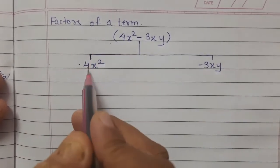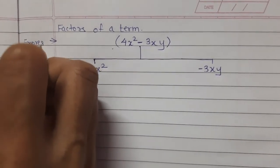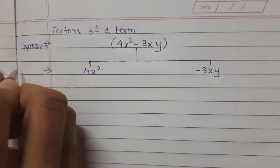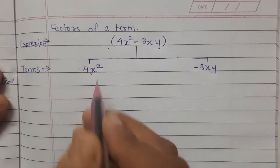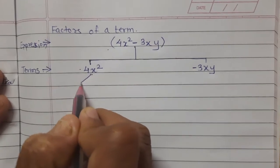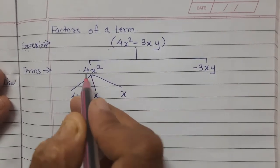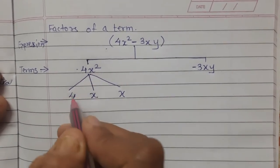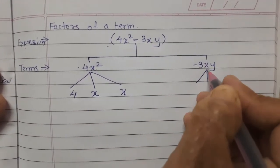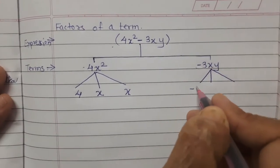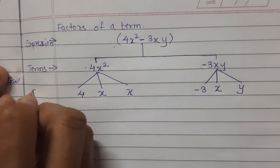To find the factors: 4x squared equals 4 multiplied by x multiplied by x, so the factors are 4, x, and x. For minus 3xy, the factors are minus 3, x, and y. These are the factors of each term in the expression.